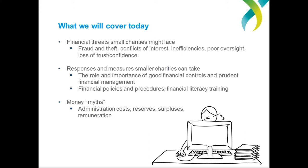Here's what we're going to cover today. We're going to look at three or four main themes linked with charity money and finances with an emphasis on smaller charities. First, we'll examine some of the financial threats and challenges that small charities might face — including fraud and theft, inefficiencies, poor oversight, conflicts of interest, loss of public trust and confidence, and perhaps even breaches of ACNC governance standards. We'll then look at the aims and importance of good financial controls and prudent financial management, as well as practical measures small charities can take. Finally, we'll look at some money myths surrounding admin costs, reserves, surpluses and remuneration, and provide some ACNC perspectives on each topic.